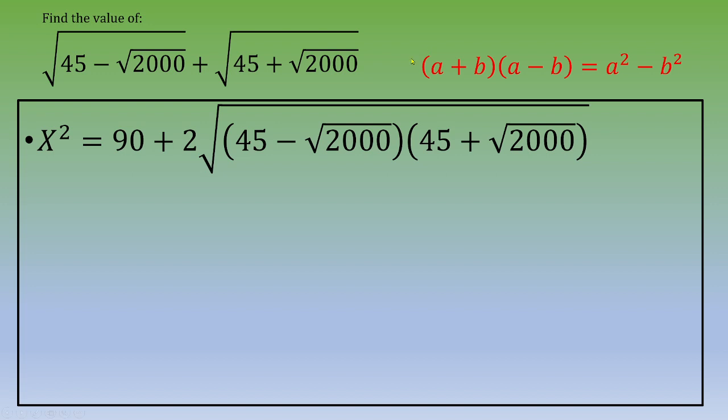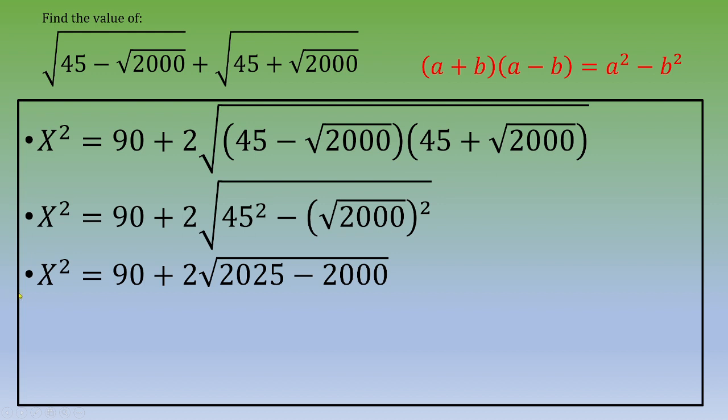So we can write down that x² equals 90 plus 2 times square root of 45 squared minus square root of 2000 squared. If you calculate, this is 45 squared minus 2000.